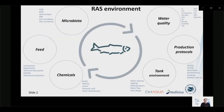What is the RAS environment? It is everything that surrounds the fish and affects them during their production in a RAS system. The main components include microbiota — consisting of nitrifying bacteria such as ammonia-oxidizing and nitrite-oxidizing bacteria, heterotrophic bacteria, and sulfur-reducing bacteria — as well as gut and skin microbiota residing on or in the fish. Feed is the main component added to RAS together with fish, and its composition, digestibility, and stability affect all components in the system.